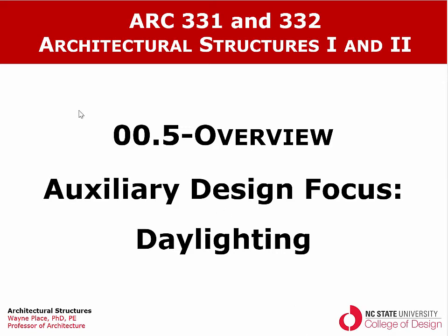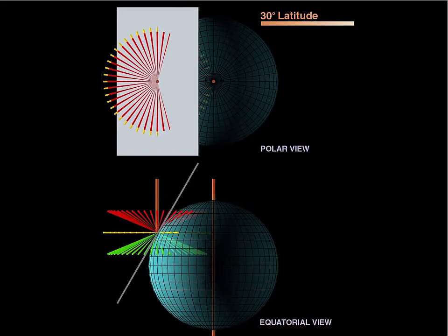In this course we're going to have nine videos that talk about lighting behavior in terms of solar angles and intensity, and what the implications are in terms of aperture orientation, aperture area, and spacing of the apertures in the building.